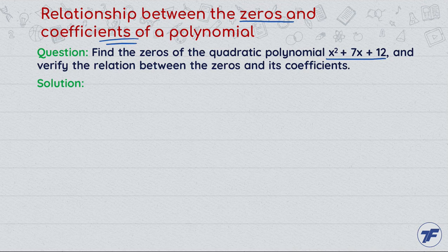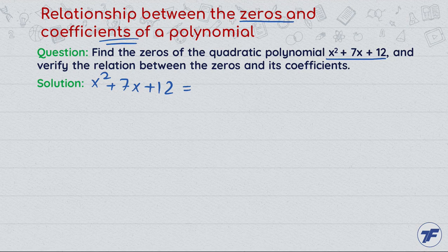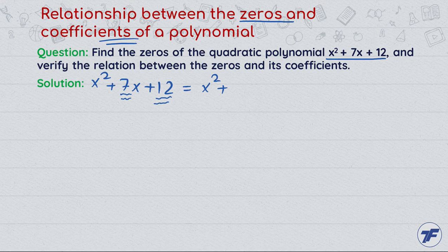So x² + 7x + 12, this is a quadratic polynomial. This can be factorized, yes this can be.